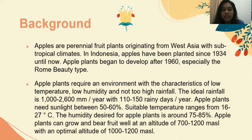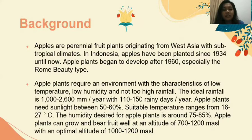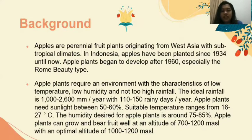Apple plants require an environment with the characteristics of low temperature, low humidity, and not too high rainfall. The ideal rainfall is 1000 until 2600 millimeters per year, with 110 until 150 rainy days per year. Apple plants need sunlight between 50 until 60%. Suitable temperature ranges from 16 until 27 degrees Celsius. The humidity needed for apple plants is around 75 until 85%.